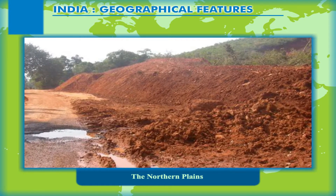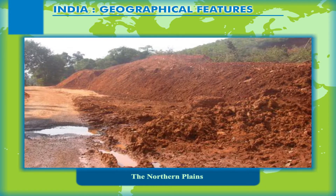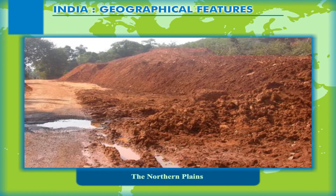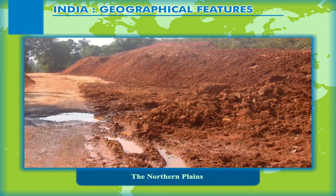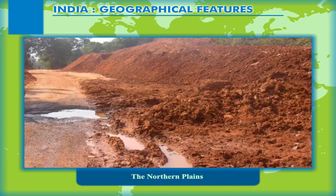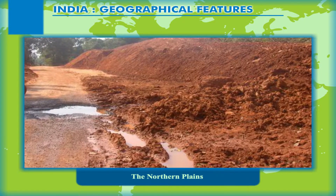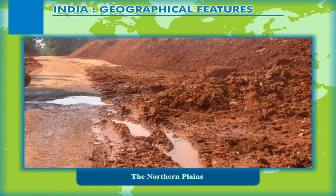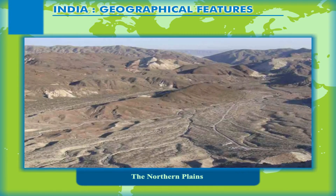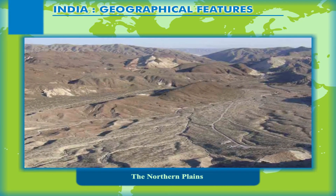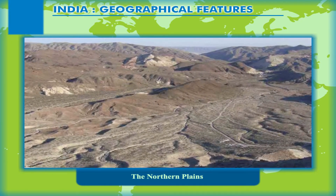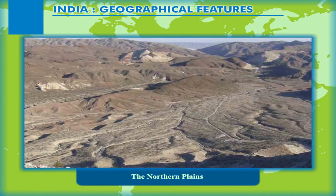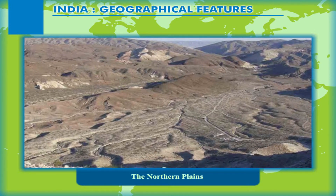The Bhangar is the older alluvial deposit, forming the upland area found above the level of the flood plain. It consists of the calcareous formation known as Kankar. The Khadar is the newer alluvium found in flood plains along the river near the banks.